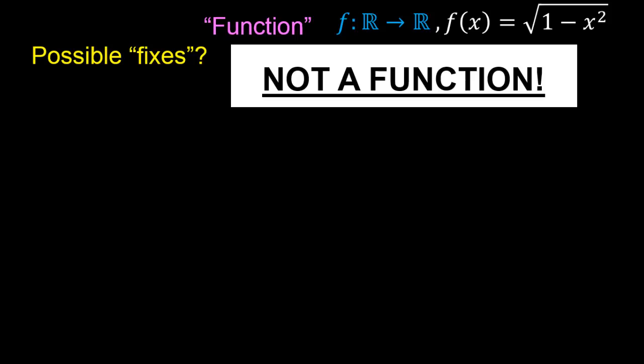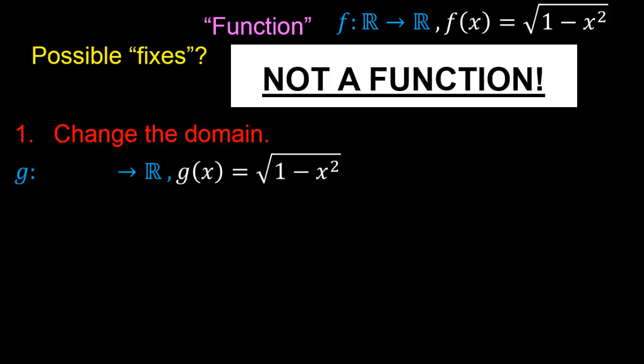So what are some possible fixes for this? How can we change f so that it becomes a proper function? Here are three possible fixes. The first possible fix is to change the domain. We could have a function g which still has co-domain ℝ and still maps each element x to the square root of 1 minus x squared, but now we change the domain to the set of real numbers between negative 1 and 1, including negative 1 and 1 themselves. With this change, g maps every element in the domain to some element in the co-domain.